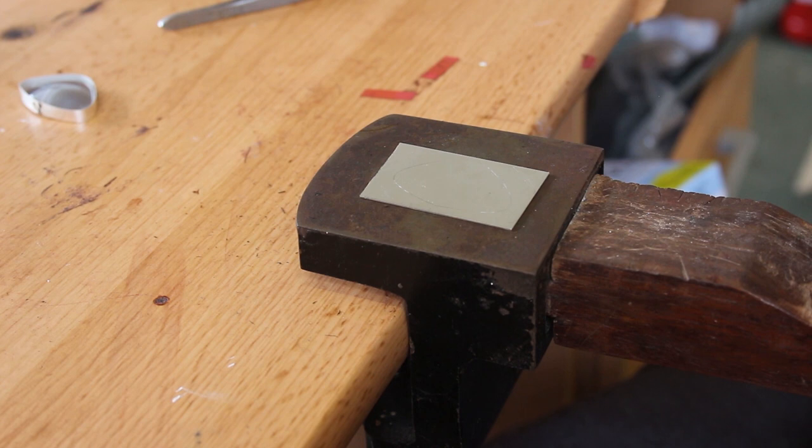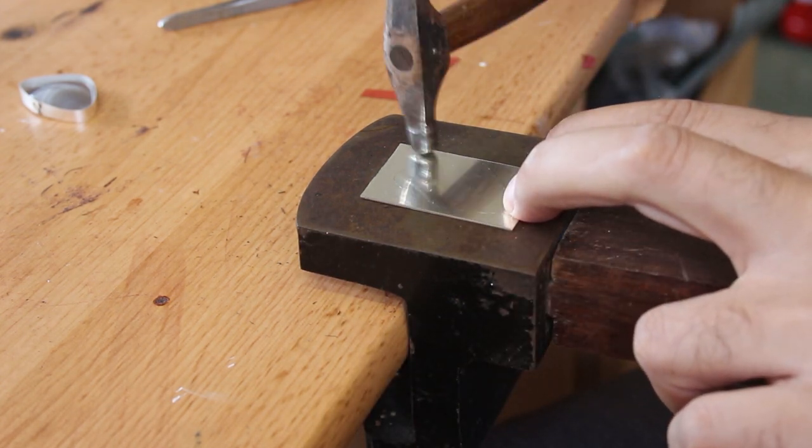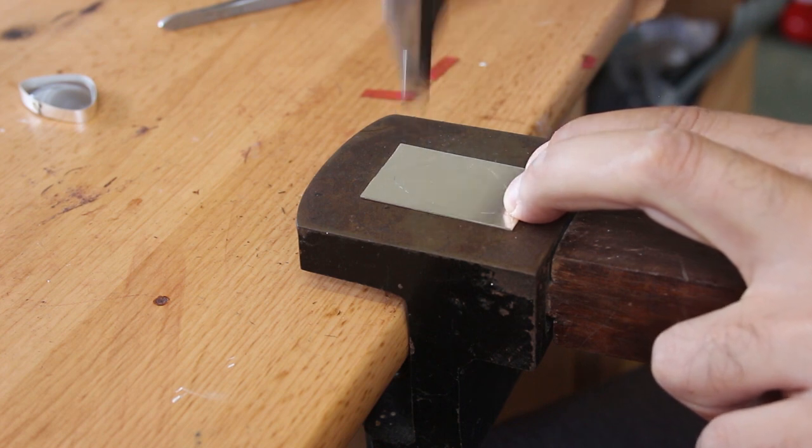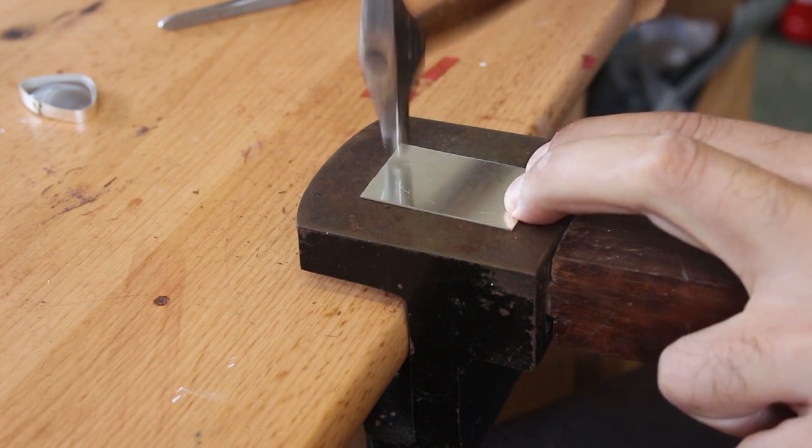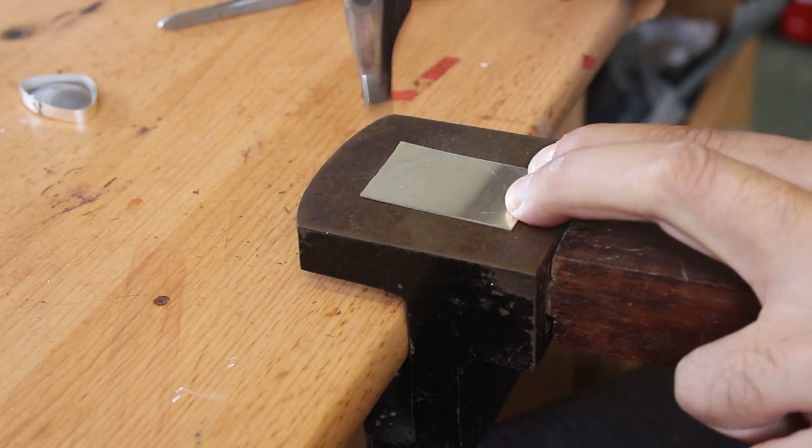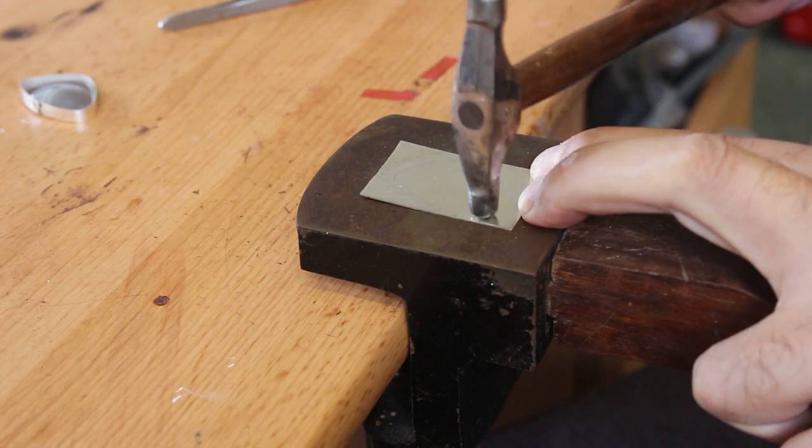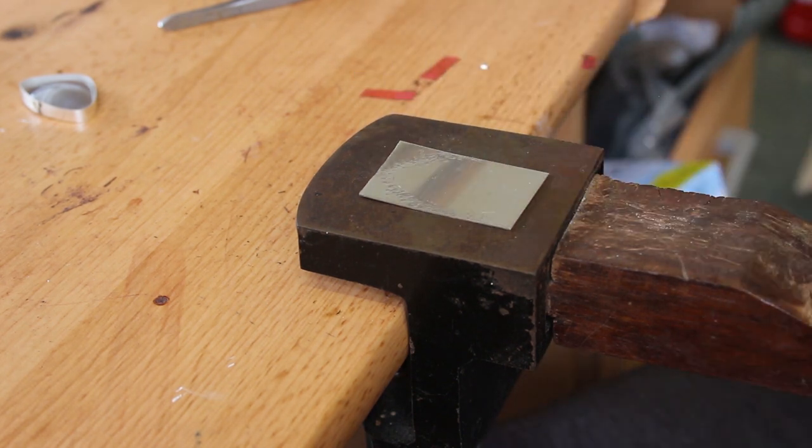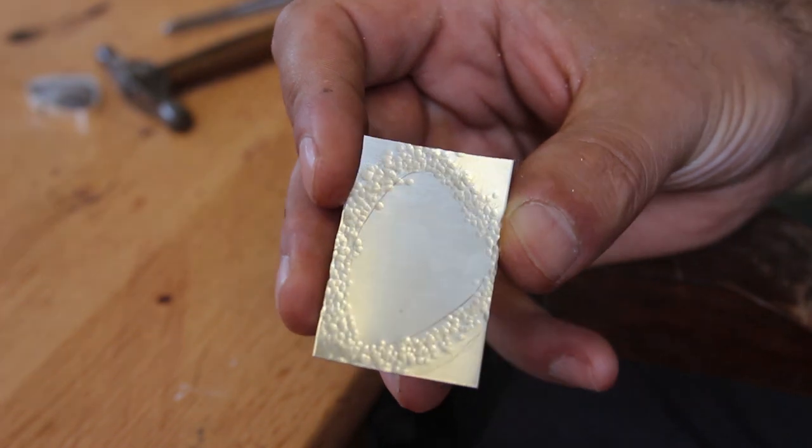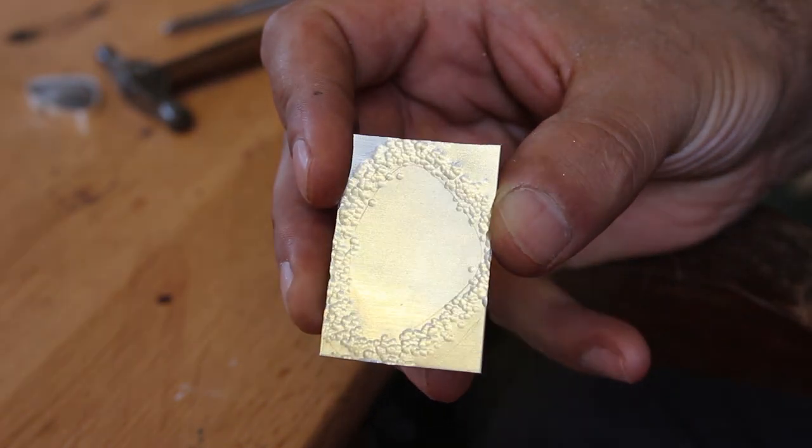So with the rough outline of where the stone would sit on the sheet, I just took a little hammer and fairly self-explanatory, really just hammered the sheet to make sure there was lots of nice dents. But I was just careful not to hammer inside of the line that I'd marked, so that I would be able to solder it onto the silver sheet without a problem.